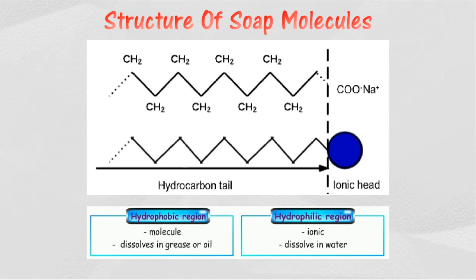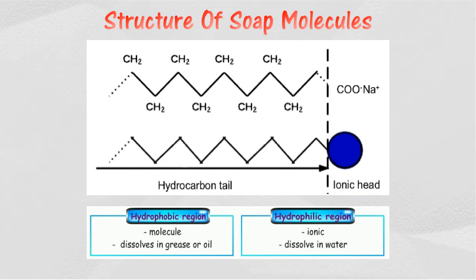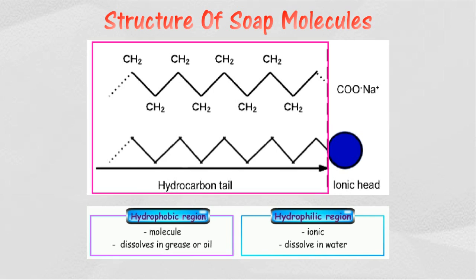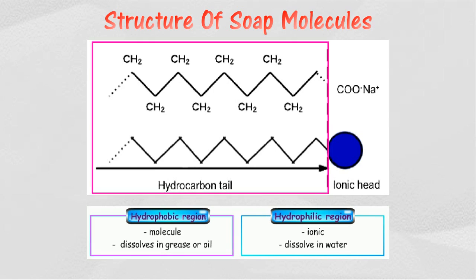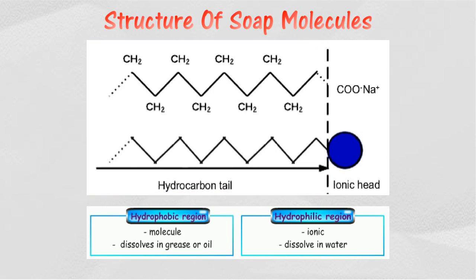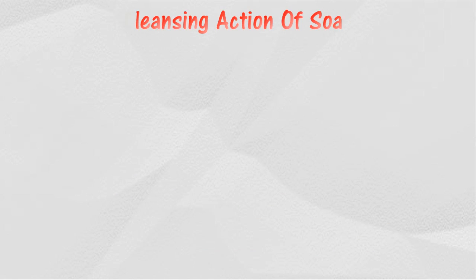Soap ions consist of two parts. The first part is the head, which contains the anion region that dissolves in water — this part is also called the hydrophilic region. The tail part consists of the hydrocarbon region which dissolves in grease or oil — this part is also called the hydrophobic region. The soap molecule has covalent characteristics.